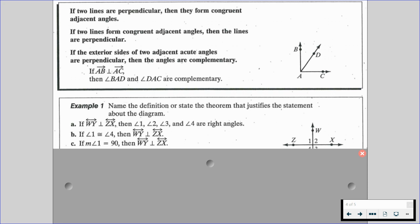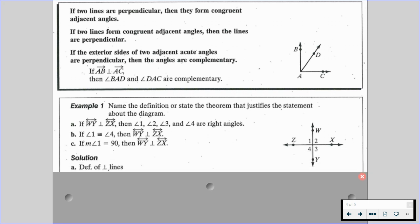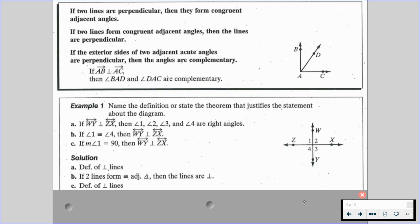When it comes to the solutions of these, A is going to be the definition of perpendicular lines. B is if two lines form congruent adjacent angles, then the lines are perpendicular. Exactly how you see it, that is completely fine to write. That shorthand is completely fine because it makes logical sense if we were to read it. And C is going to be the definition of perpendicular lines.